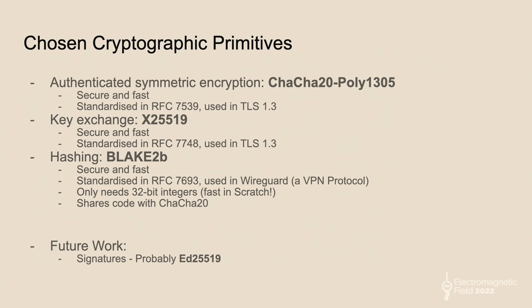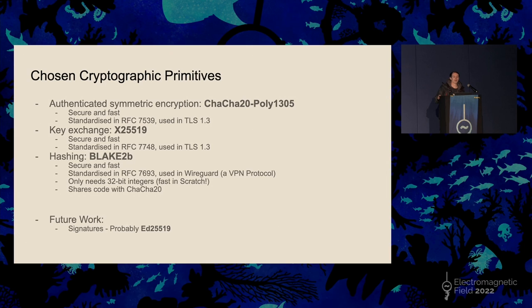The algorithms I chose to implement: the first is ChaCha20-Poly1305, an authenticated symmetric encryption algorithm. I chose it because it's secure, fast, standardized, and used in TLS 1.3. Also, X25519, a key exchange algorithm — also secure, fast, standardized, and used in TLS 1.3. TLS is what underpins HTTPS used by web browsers, so every time you load a web page over HTTPS, there's a chance your browser is using these same ciphers to encrypt the web page.